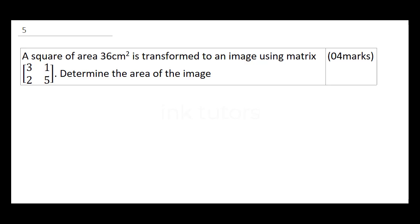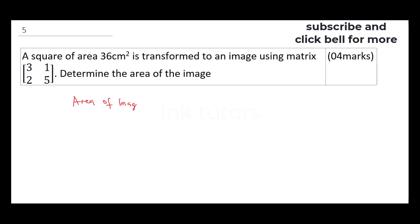In order for you to solve this question, to find the area of the image, the area of the image is going to be the determinant of the 2 by 2 matrix multiplied by the area of the object.